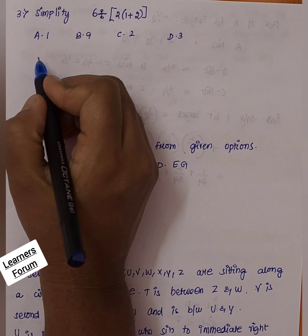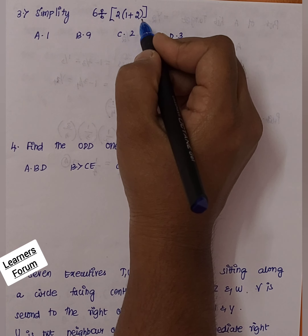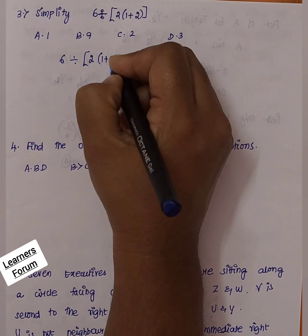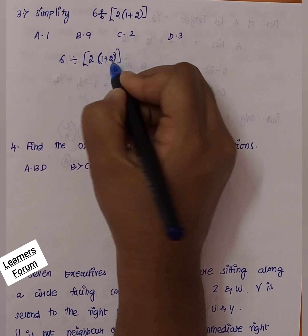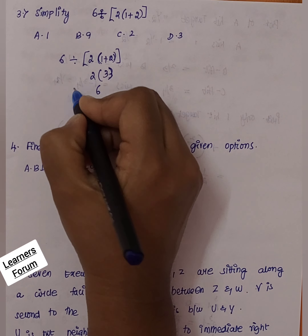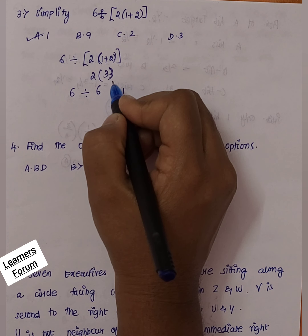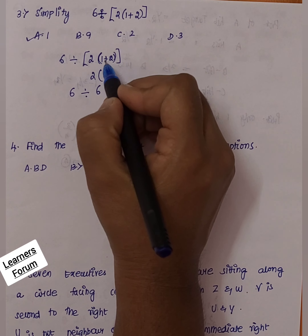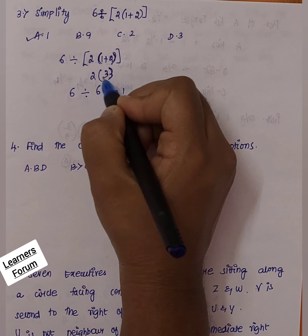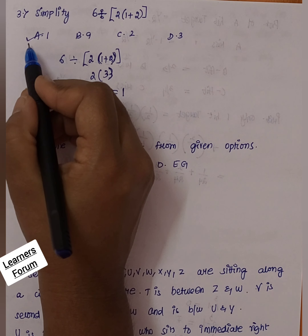Next question: simplify 6 divided by 2 into (1 plus 2). To solve this, we follow the order of operations starting with the innermost bracket first. Evaluating (1 plus 2) gives 3, so 2 into 3 is 6. We then have 6 divided by 6, which equals 1. So option A is our correct answer.